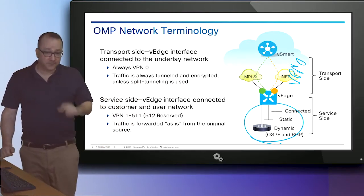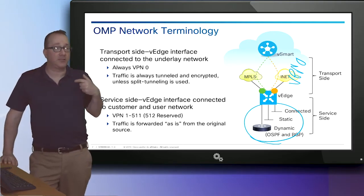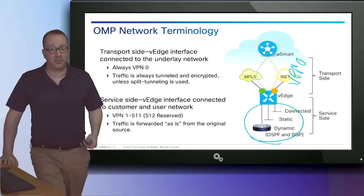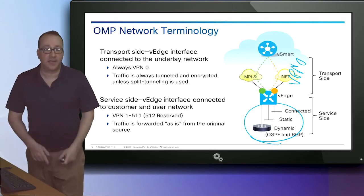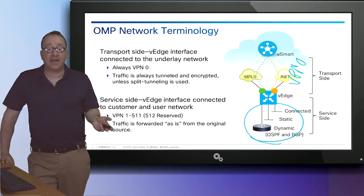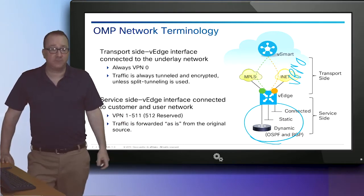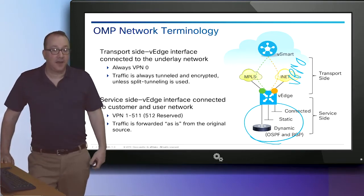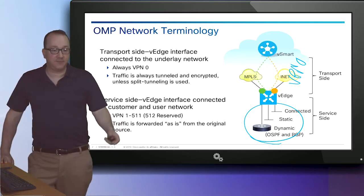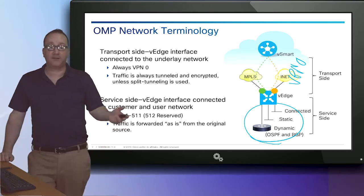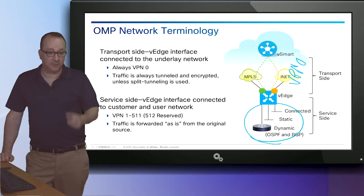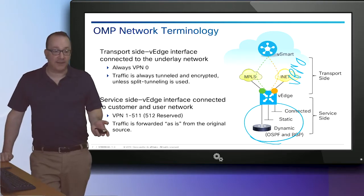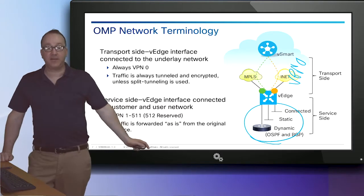The service side — VPN 1 through 511 — is where we run connected, static, OSPF, and BGP routing. All routers must learn all prefixes, which is the default route distribution policy. V-Edge devices learn their service side prefixes via connected, static, and dynamic protocols. All prefixes learned from the service side are advertised to the V-Smarts, which then reflect that information to other routers over the network's control plane. The controllers do not handle any data traffic — they are only involved in control plane communication. No traffic is ever sent to the V-Smarts.